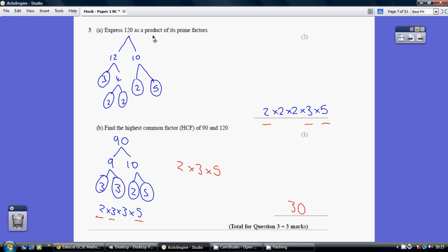So our product, that means times together, is 2 times 2 times 2 times 3 times 5.